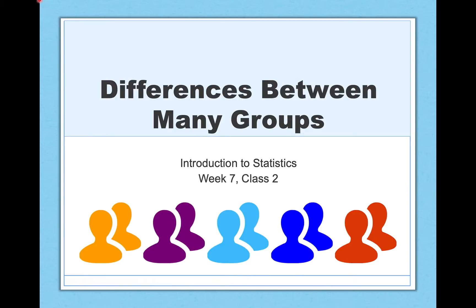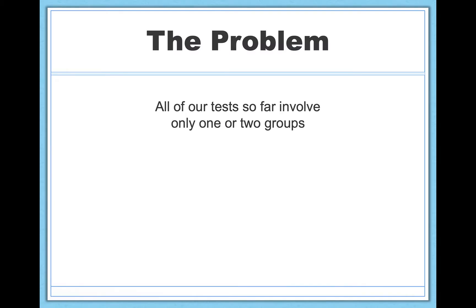So far in this series of videos, we've learned about four different hypothesis tests: the one-sample Z test, the one-sample T test, the independent samples T test, and the dependent samples T test. Now these tests are very powerful and uniquely suited to address different experimental contexts, but they share one big limitation.